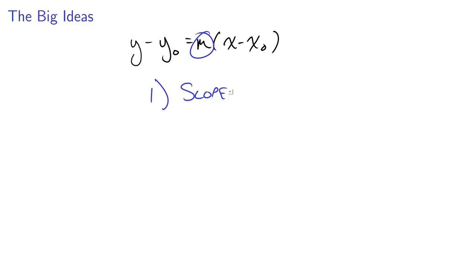No matter what information they give you, even if they don't tell you the slope explicitly, that's the first thing you want to look for. The second thing you're looking for is a point, just any point that the line passes through.